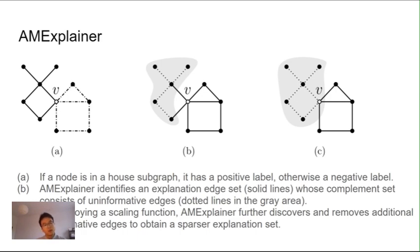Here is an example. In graph A, if a node is in a house subgraph, it has a positive label. Otherwise, it will have a negative label.